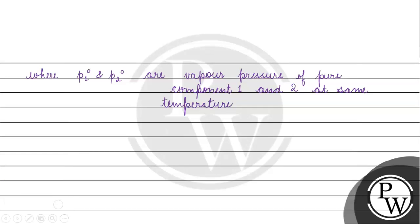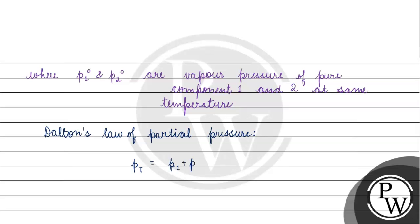P1° and P2° kya ho jaega? Ye basically hamare paas partial vapor pressure of pure component 1 and 2 at same temperature hai. Ab is question mein kya diya hua hai? Dalton's Law of partial pressure kya bolta hai? Ki tumhara total pressure hoga, yani P_total, will be sum of partial pressures. P1 = P1° × x1 and P2 = P2° × x2. Toh total pressure = P1 + P2.